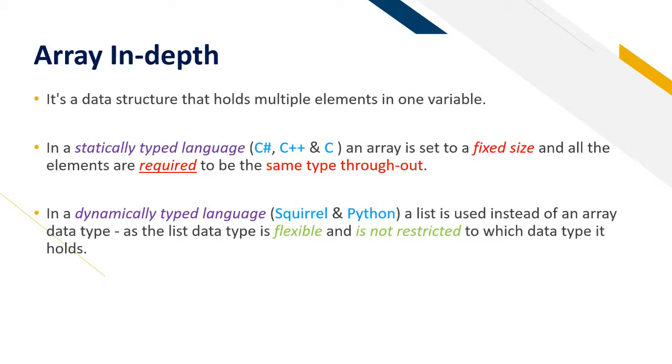In a statically typed language, C language and many others, an array is set to a fixed size and all the elements are required to be the same type throughout. In a dynamically typed language like Squirrel and Python, a list is used instead of an array data type as the list data type is flexible and is not restricted to which data type it holds. That's one of the advantages but also one of its disadvantages.